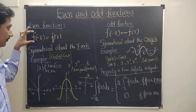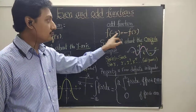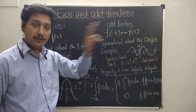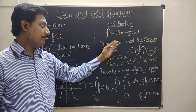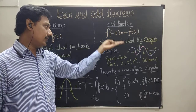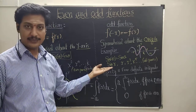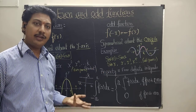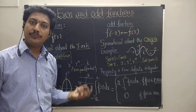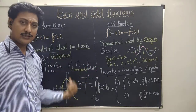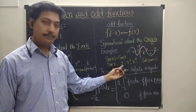For an odd function, when we replace x by minus x, it gives minus f(x) — a minus sign appears in front of the function. The graph of an odd function is symmetric about the origin. Examples: sin(−θ) = −sin θ, so sin x is a good example of an odd function. cos x is even, sin x is odd, and odd-degree polynomials like x, x³, x⁵ all come under the odd category.